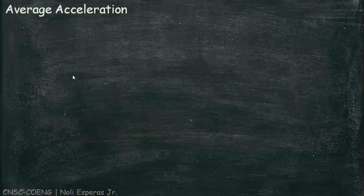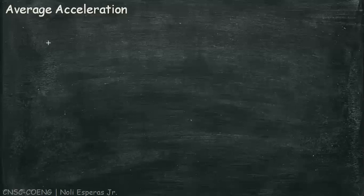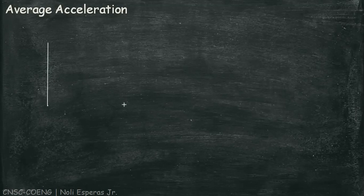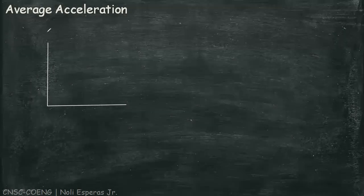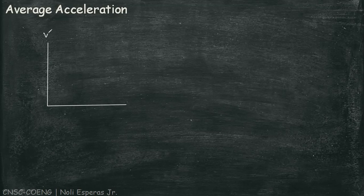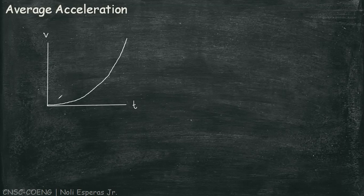Let's have first the average acceleration. We can also represent or determine the acceleration using a graph. Instead of using the y-axis as position, we're going to use velocity. And for the horizontal axis or the x-axis, we have time. And that represents the velocity with this graph.